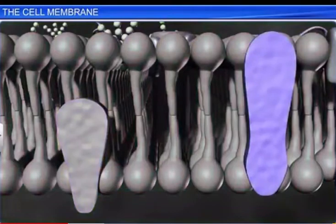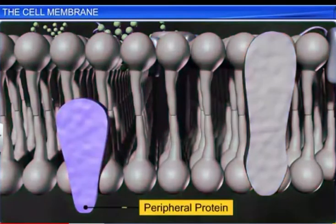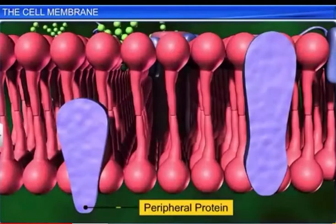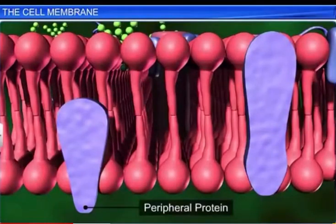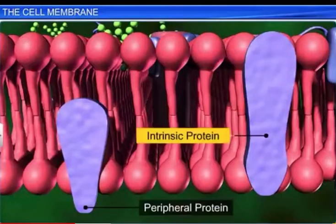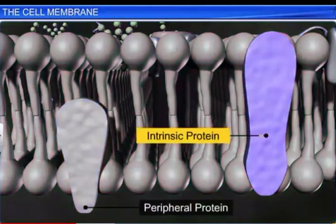Peripheral proteins lie on the surface of the membrane and can be easily removed by physical methods. On the other hand, intrinsic proteins are totally or partially embedded in the bilayer and can be removed only after disrupting the entire membrane.